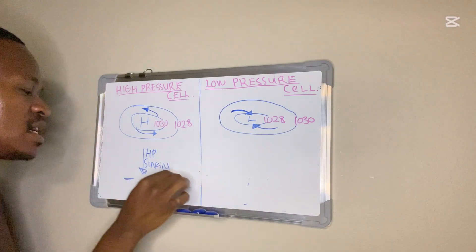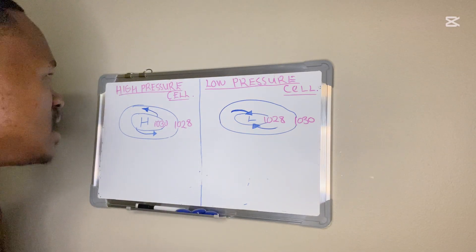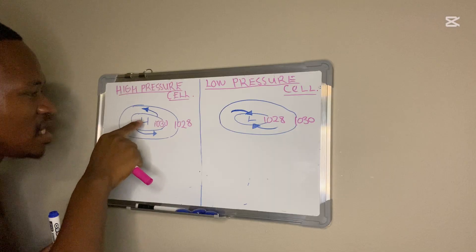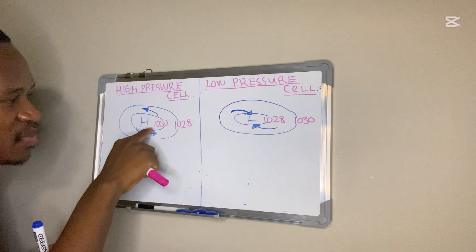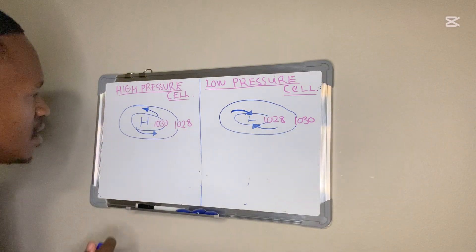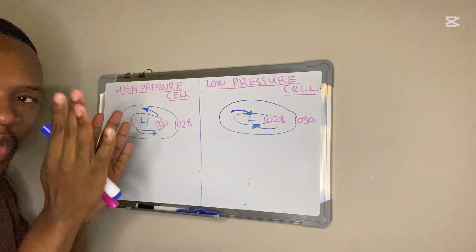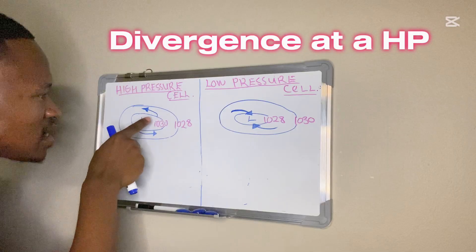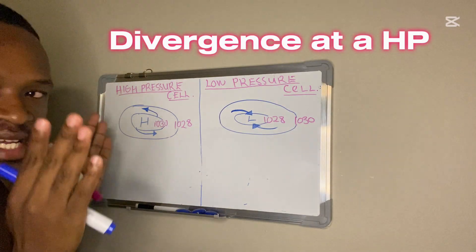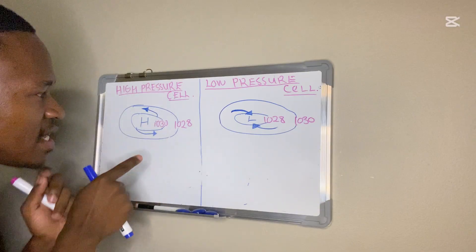Now let's look at our high pressure cell diagram with isobars and arrows. If you look at the high pressure cell, you will see arrows moving away from it. These arrows represent the movement of wind. With high pressure, the air diverges — it moves away — hence the arrows point away from the high pressure.